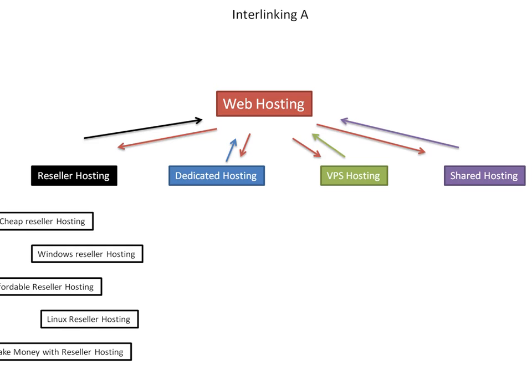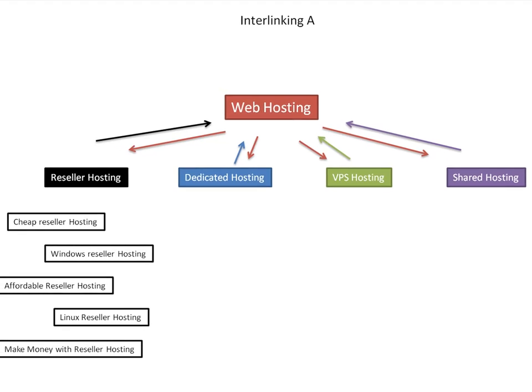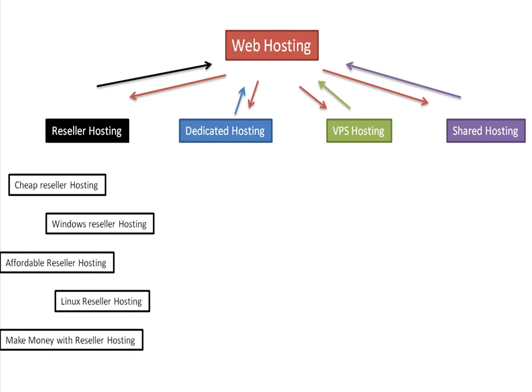We're going to build a siloing structure based on these secondary keywords and interlink everything so tightly that there will be no doubt about what signals we're sending the search engine robots. The relevancy is going to be so tight that even Google AdSense will totally recognize exactly what kind of ads it should be showing because of the way you've structured everything. Under reseller hosting, we've got posts like cheap reseller hosting, Windows reseller hosting, affordable reseller hosting, Linux reseller hosting, and make money with reseller hosting. Depending on how competitive your keyword is will determine exactly how many posts you need.